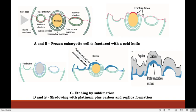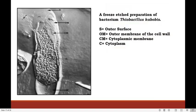In the figure, you can see this technique. Figures A and B show a frozen eukaryotic cell fractured with a cold knife. Figure C shows etching by sublimation. Figure D shows shadowing with platinum and carbon, and figure E shows replica formation. A freeze-etched preparation of bacterium Halobacillus is also shown, where you can see its outer surface denoted by S, outer membrane of cell wall denoted by OM, cytoplasmic membrane denoted by CM, and the cytoplasm denoted by C.